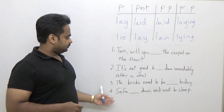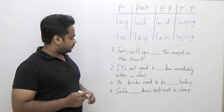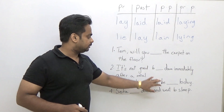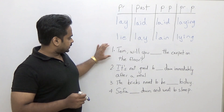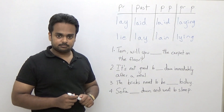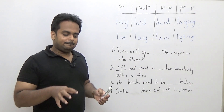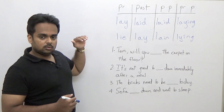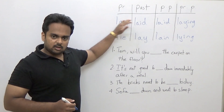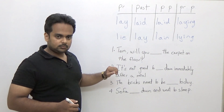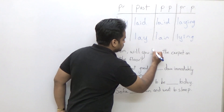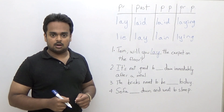Now here are some practice sentences. Your job is to take the correct word from the table and put it in the blank. First: 'Tom, will you ___ the carpet on the floor?' Tom needs to put the carpet on the floor, so we need the verb 'lay'. This is a question using the present base form, so: 'Tom, will you lay the carpet on the floor?'